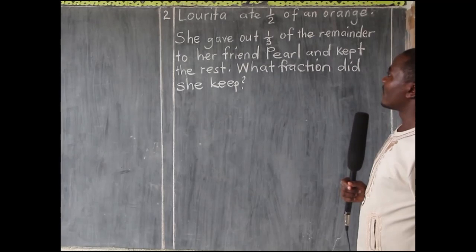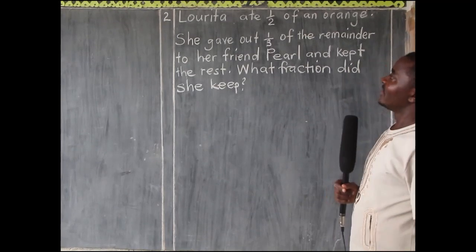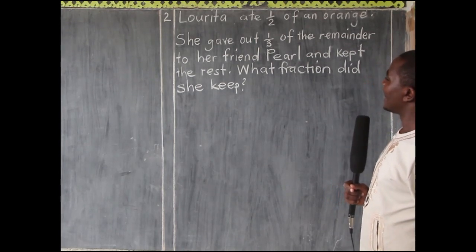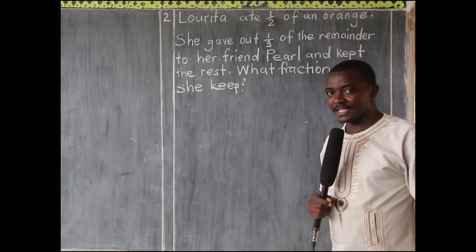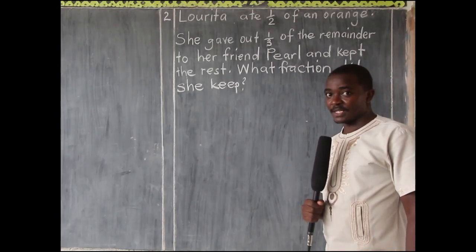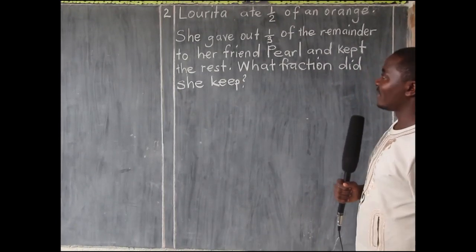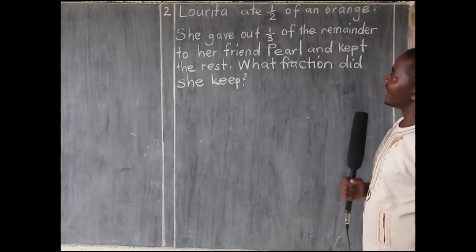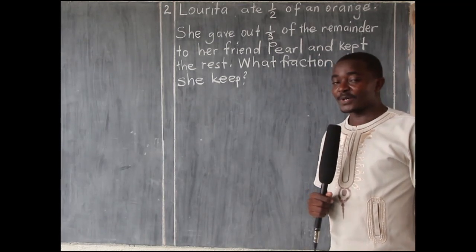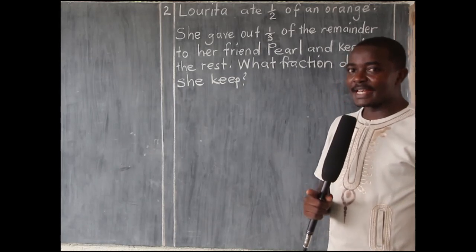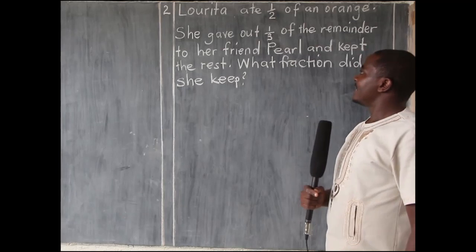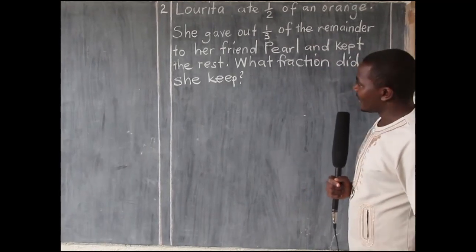Rolita ate a half of an orange. She gave out a third of the remainder to her friend Pearl and kept the rest. There are words we have to interpret very carefully. You can see there is the word 'remainder,' so we must be very careful. What fraction did she keep?